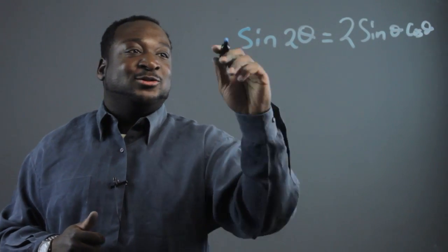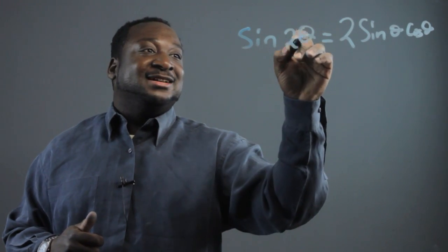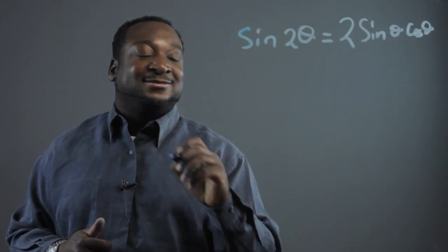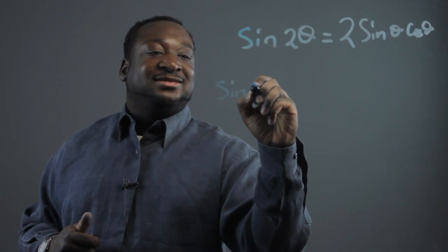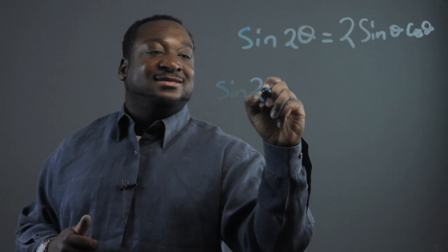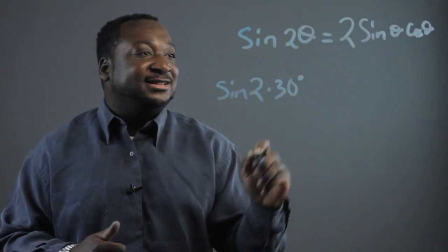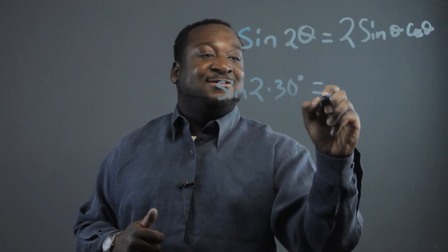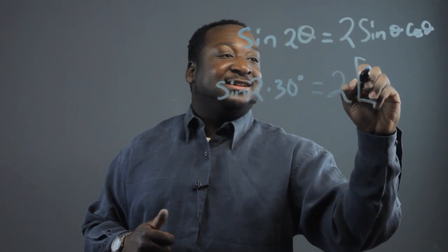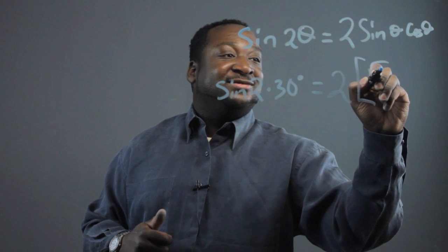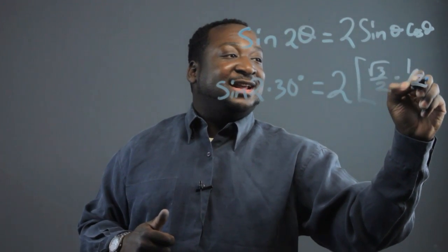So let's say we were trying to find the sine of 2 theta and theta was 30 degrees. The sine of 2 times 30 degrees is equivalent to 2 times the root of 3 over 2, times 1 half.